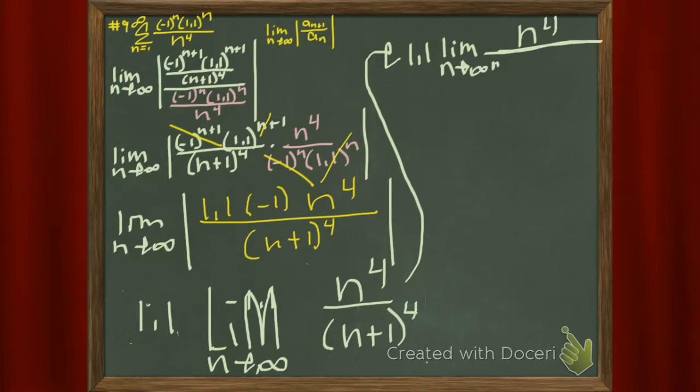That denominator multiplies out to be n to the fourth plus 4n cubed plus 6n squared plus 4n plus 1. What are we doing? We're running the limit, so I divide top and bottom by n to the fourth.